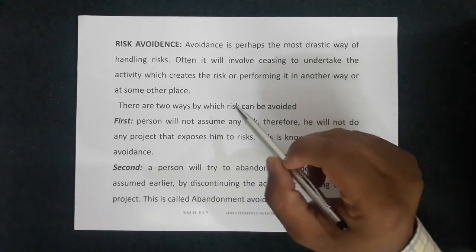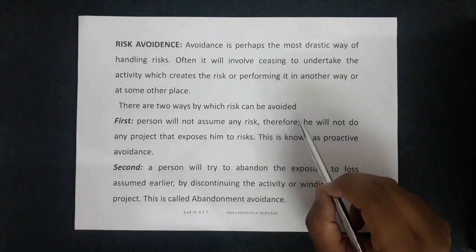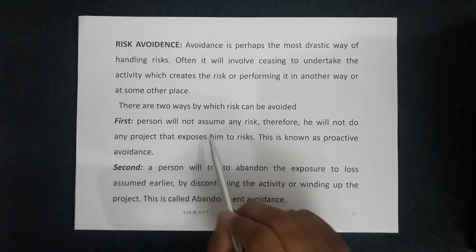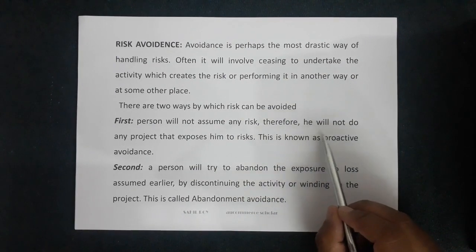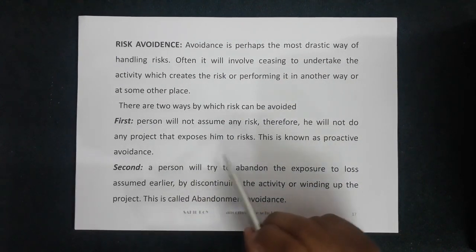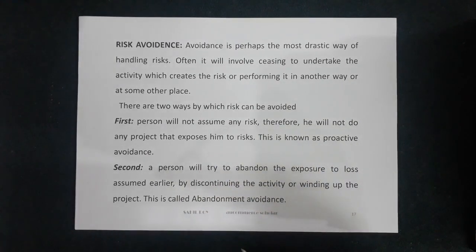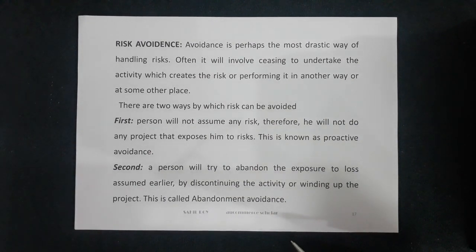There are two ways by which risk can be avoided. The first is that a person will not assume any risk, therefore he will not do any project that exposes him to risk. This is known as proactive avoidance — where you identify in advance that doing this work will cause us loss, so we simply will not do it.